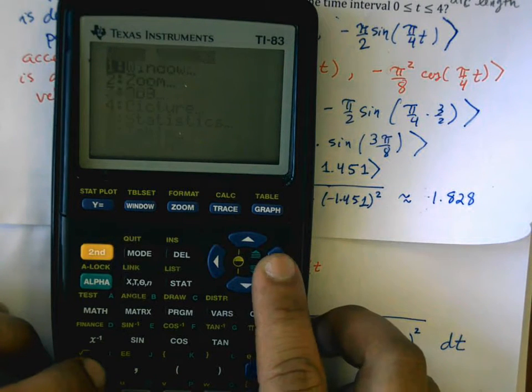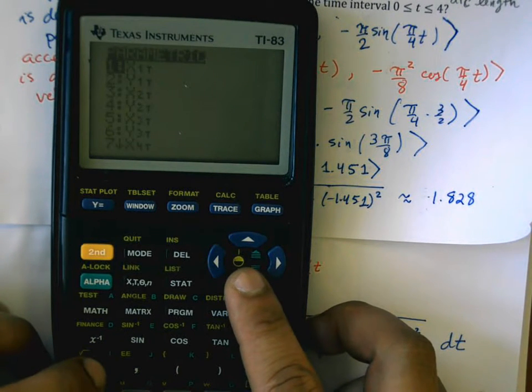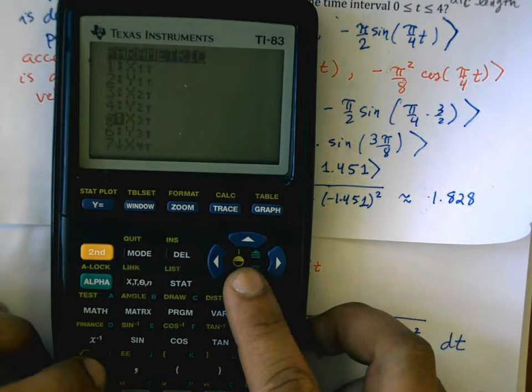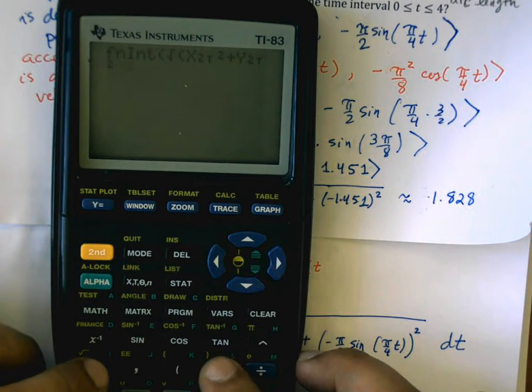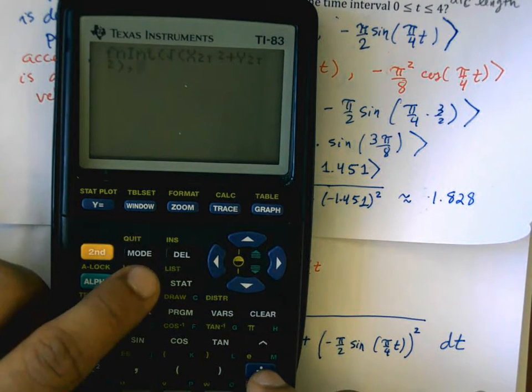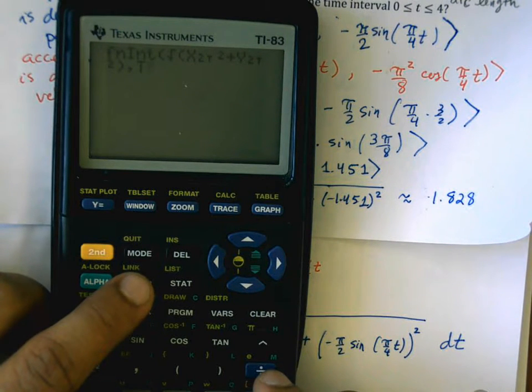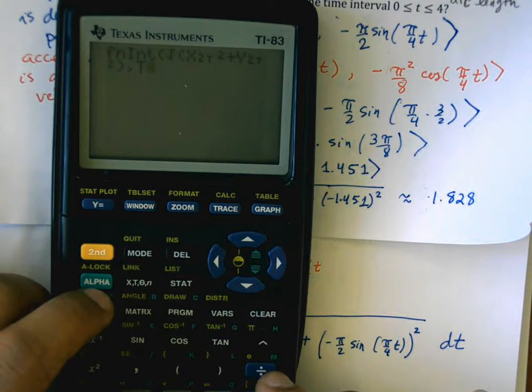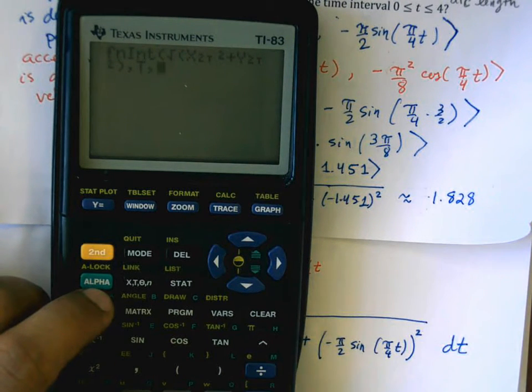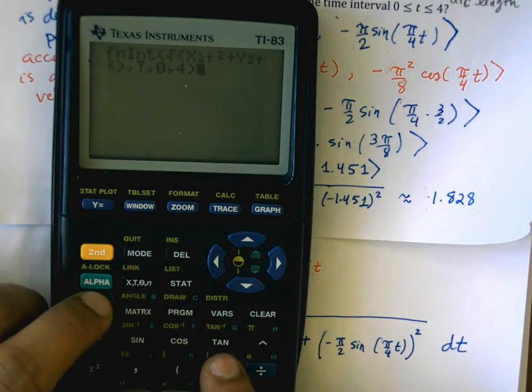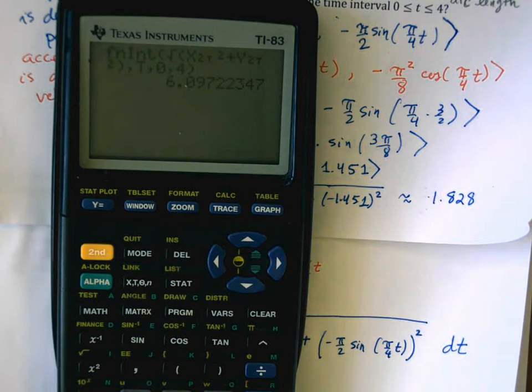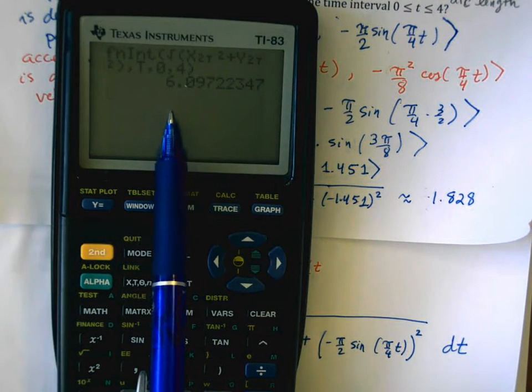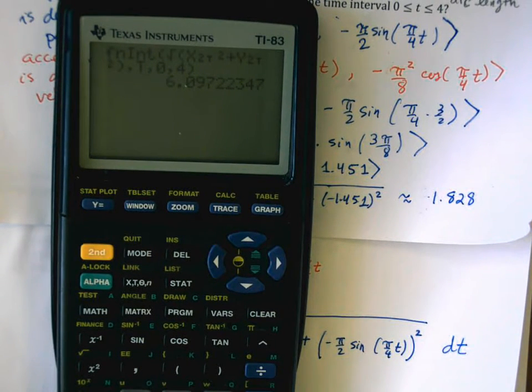Plus vars, y-vars, go down to parametric, y2, and square it, close the square root. The next argument you have to type in here is the variable so that the calculator knows what it's integrating with. So this is like dt. And then the lower bound, which is 0, and the upper bound, which is 4. And then close everything, hit enter, and let your calculator go to work. And when you're done, you get this expression, 6.097.